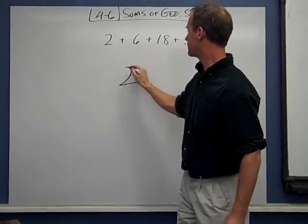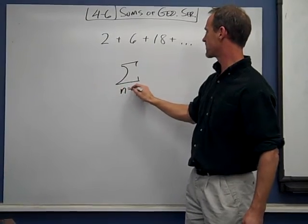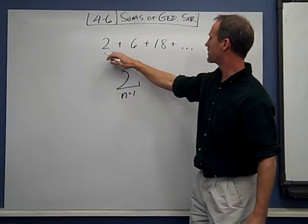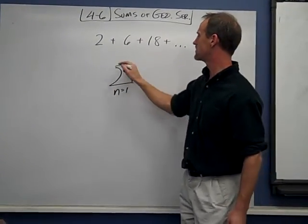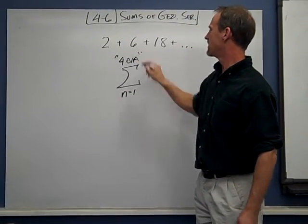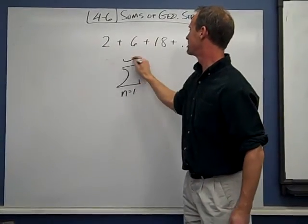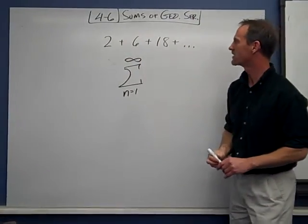Well we write down the sigma sign and we're going to start at the first term, and we're going to go forever. So you could write it like this, forever. No, you can't do that actually. We're going to do it with infinity. We're going to go forever.